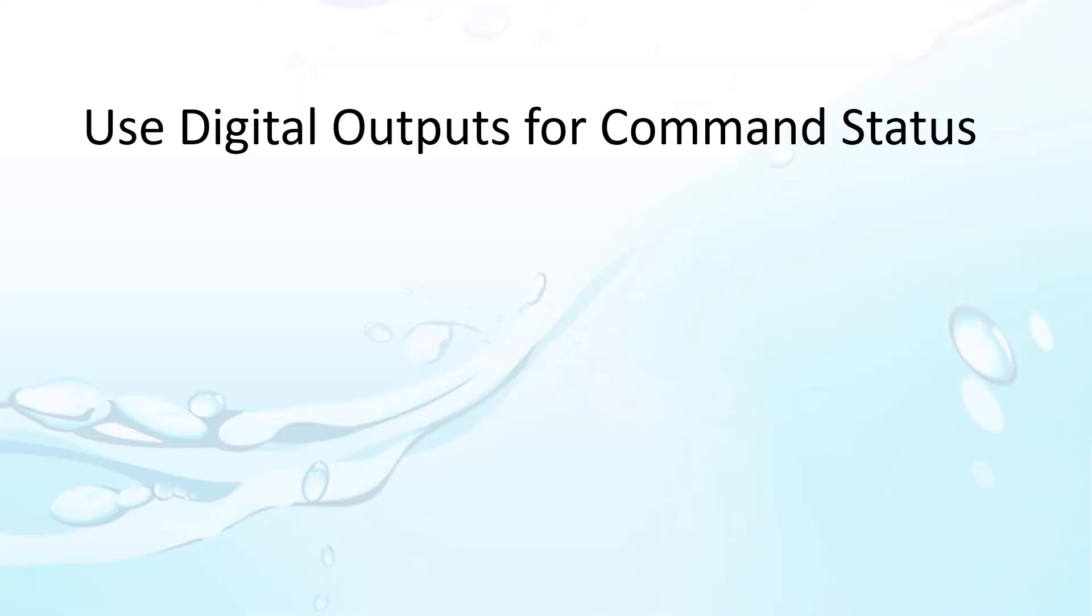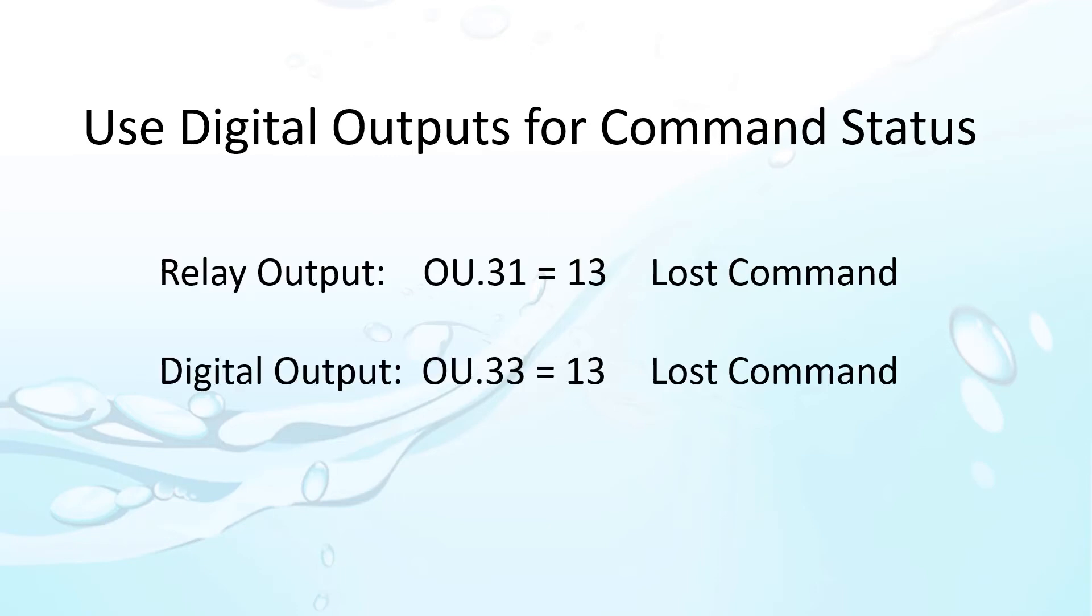You can use digital outputs to signal when comms have been lost. That can be real handy when you are trying to debug issues or just want to give your controller some feedback that comms are working. On the base drive, you would set either the output relay to a 13 or the digital output to a 13. The output will change when there is a loss of command from the RS-485 comms.